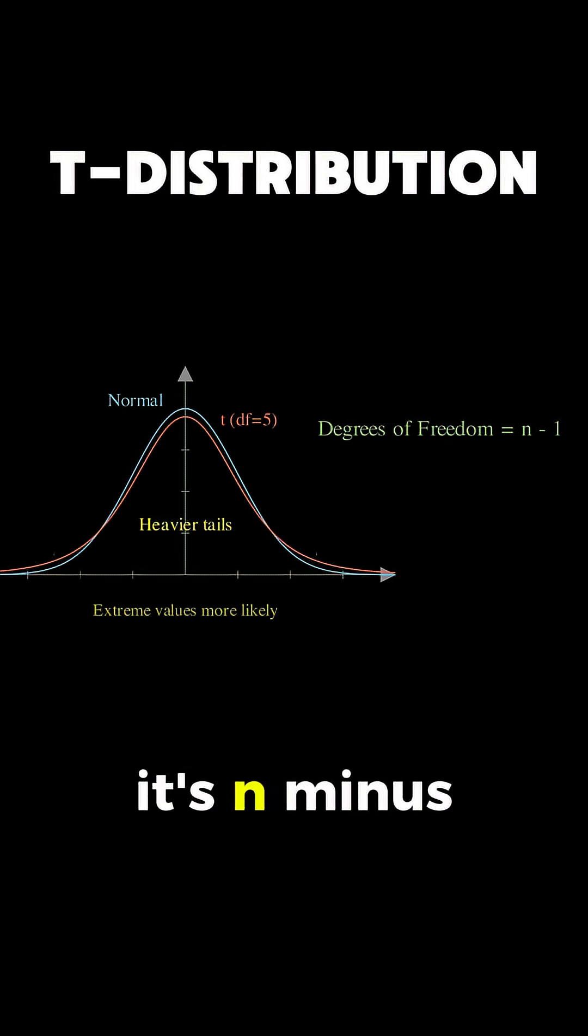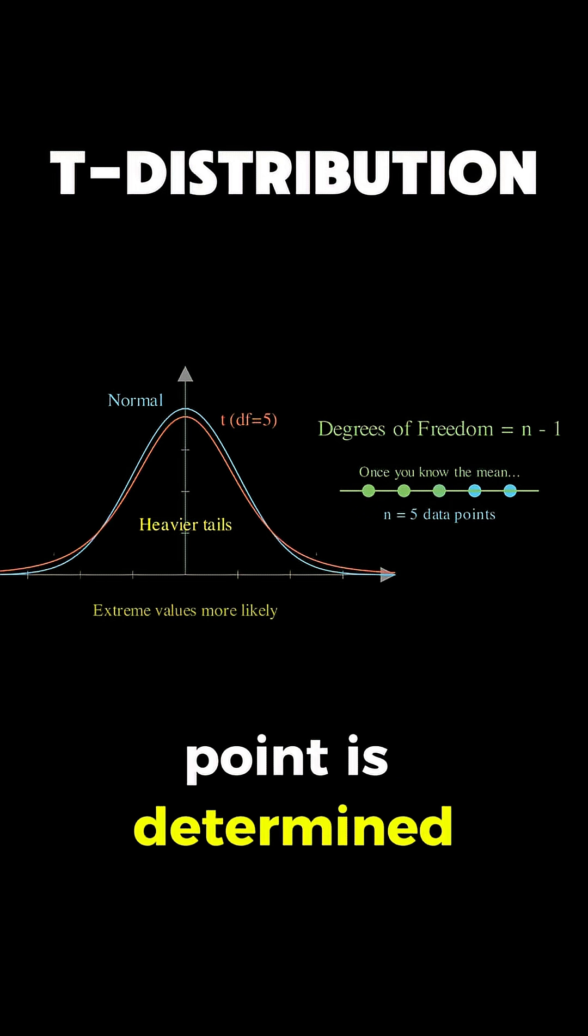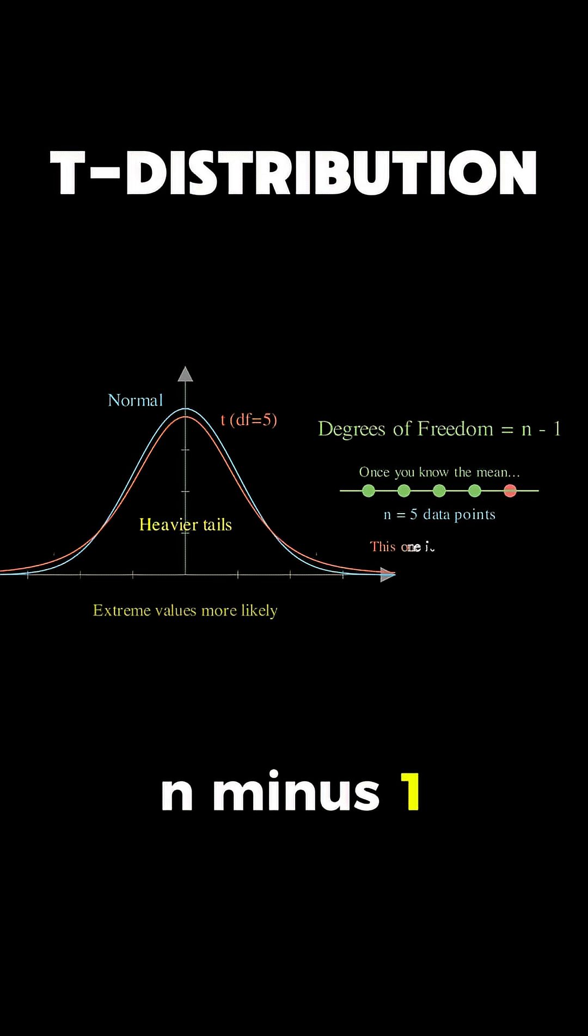The reason it's n-1 rather than n has to do with the fact that once you know the sample mean and n-1 of the data points, the last data point is determined, so you really have only n-1 independent pieces of information.